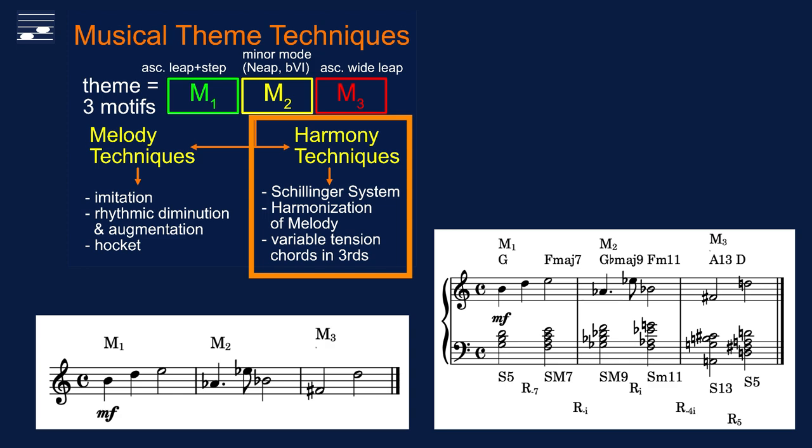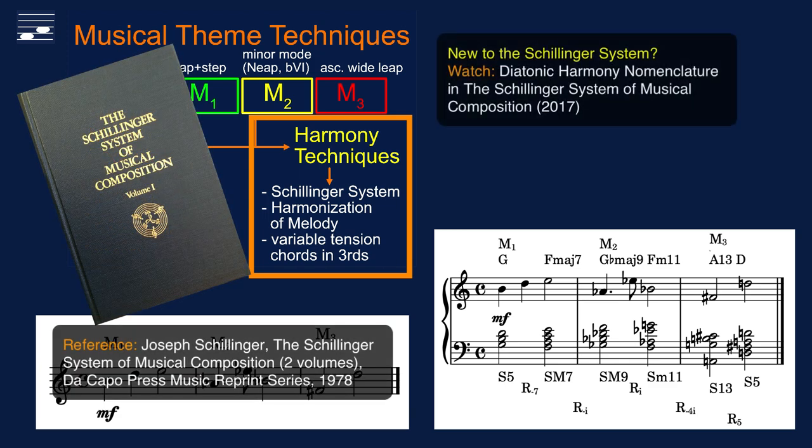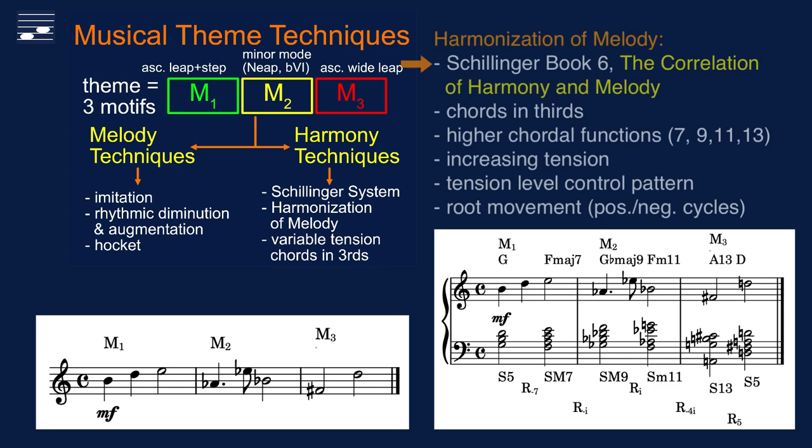We'll harmonize this melody using a technique from the Schillinger system of musical composition. In this two-volume set of books you'll find many approaches to writing harmony. I did a series of tutorials on diatonic harmony and how to control the tension level in chord progressions. Here we'll harmonize the melody with a technique from book 6. We'll use chords in thirds.